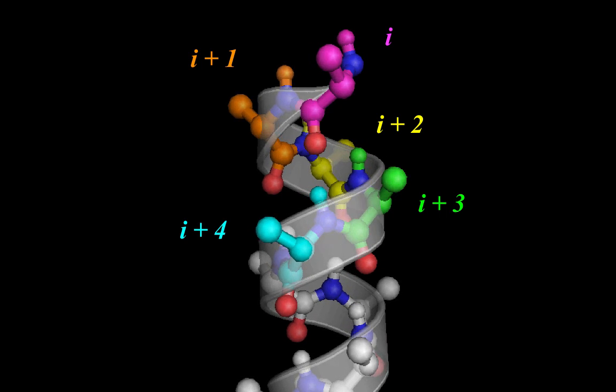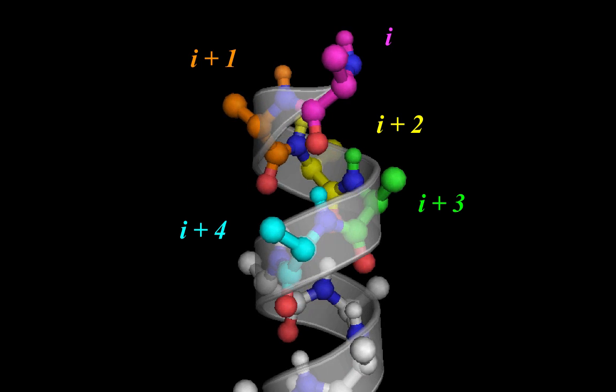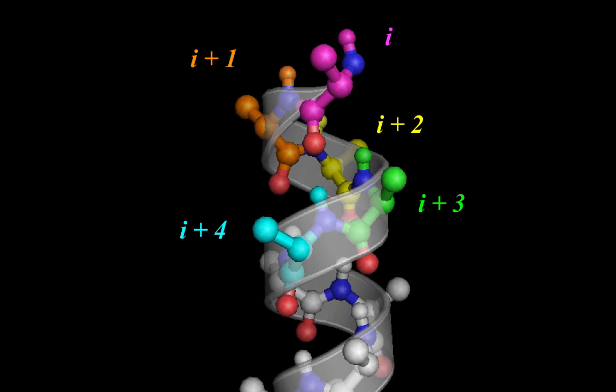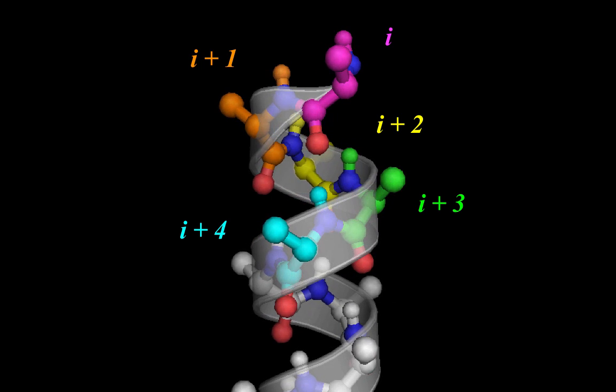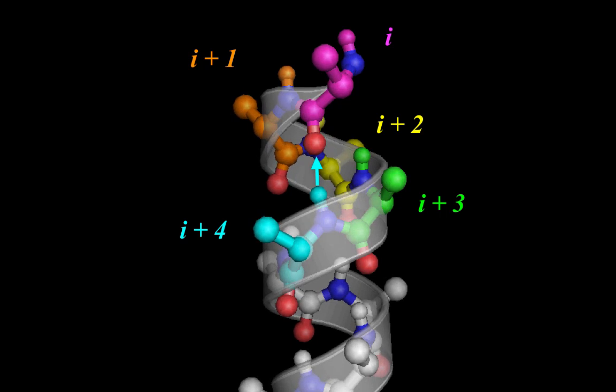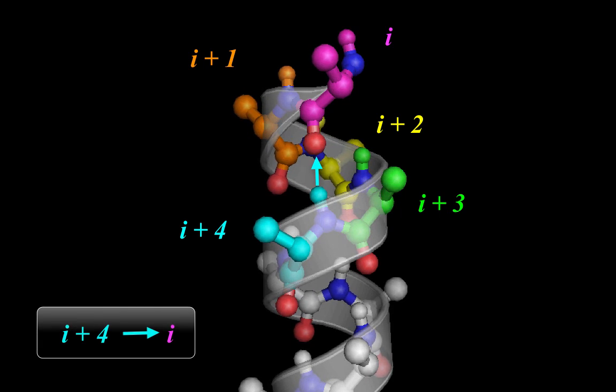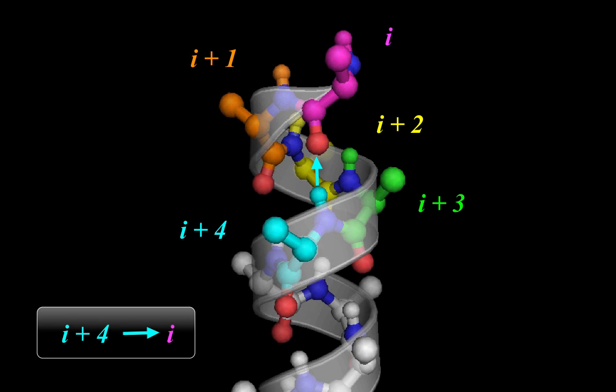Because of the geometry of the alpha helix, there is a special relationship between I and I plus four. The blue I plus four residue donates its hydrogen through a hydrogen bond to the carbonyl oxygen of the pink I residue. Termed I plus four to I, this is the defining hydrogen bonding pattern of the alpha helix.